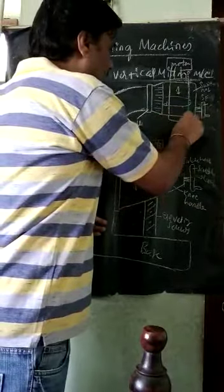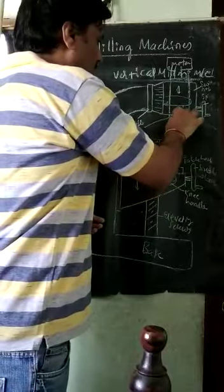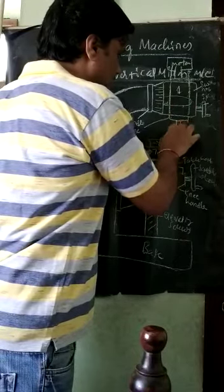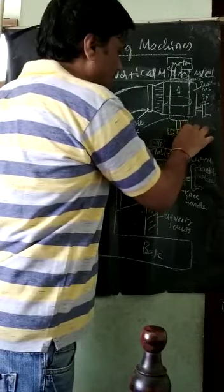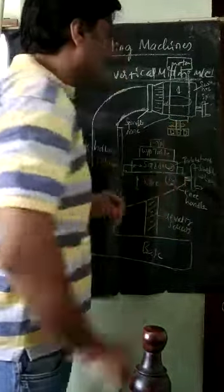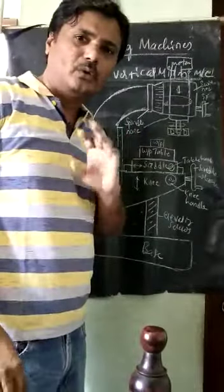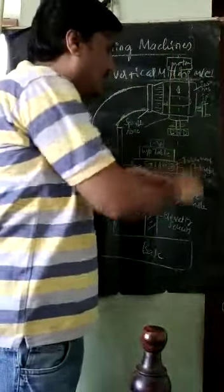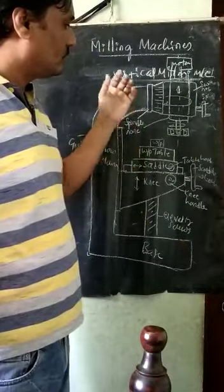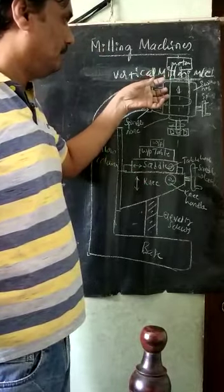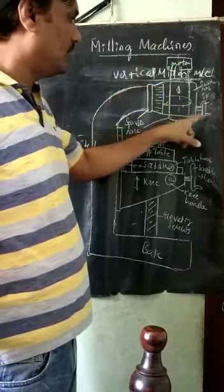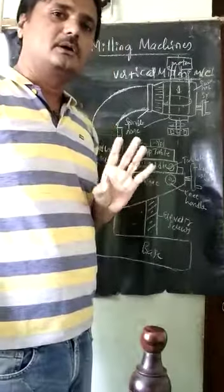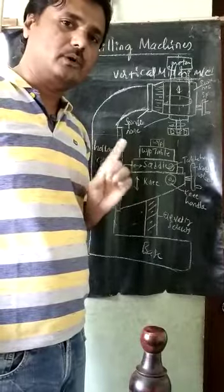The spindle nose is where we fix the milling cutter — the milling cutter is fitted to the spindle and will rotate because of it. Only this much has to change from the horizontal milling machine for it to become a vertical milling machine, because this axis is now vertical. We can swivel the spindle and move it up and down by the wheel, and the cutter is rotated through the spindle by the motor.